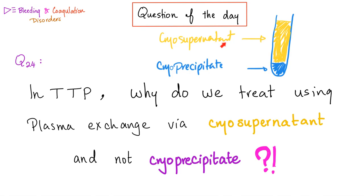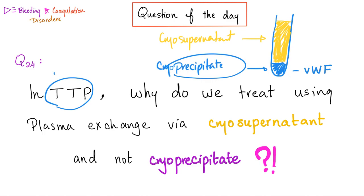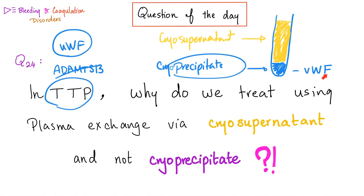In TTP, we use the cryosupernatant and not the cryoprecipitate. Why? Because the cryoprecipitate contains von Willebrand factor. The pathophysiology of TTP involves a problem with ADAMTS13 — when ADAMTS13 is deficient, we cannot break down von Willebrand factor multimers into small monomers. So the problem in TTP is von Willebrand factor, and we do not use cryoprecipitate. Instead, we use the cryosupernatant because it does not contain von Willebrand factor.